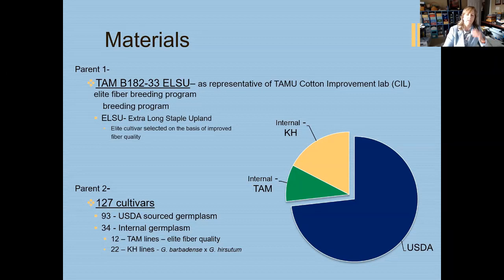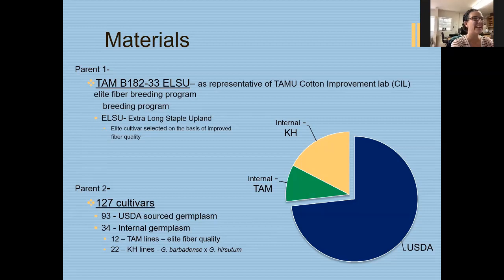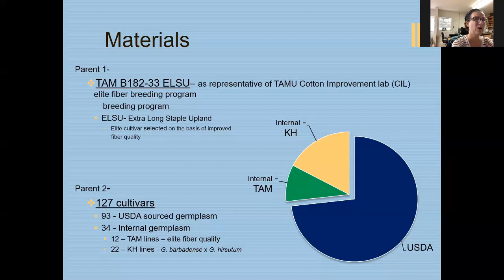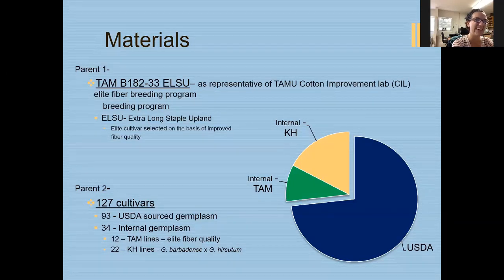There's a negative correlation between lint yield and fiber quality — fiber strength — right? They don't necessarily have a negative correlation. We had a previous master's student who looked at that. If you are selecting for both of them at the same time, you don't necessarily get a negative correlation. However, if you highly focus on one of the traits, you tend to ignore yield a little bit, but it can be kept around if you try hard enough.